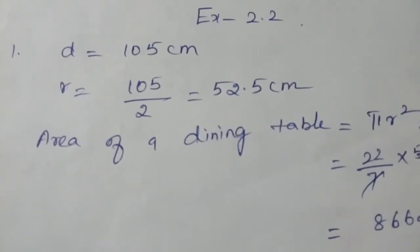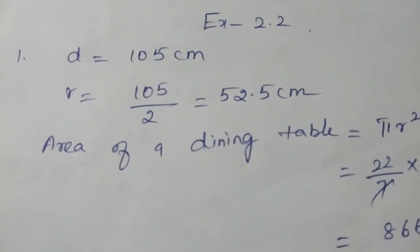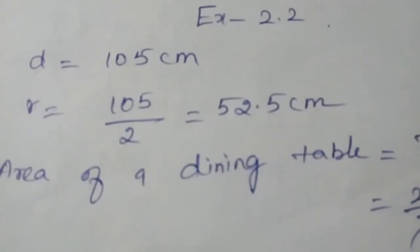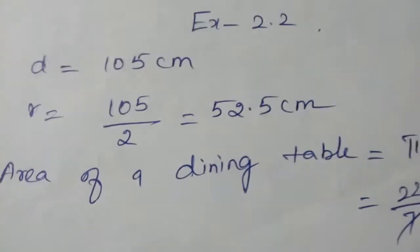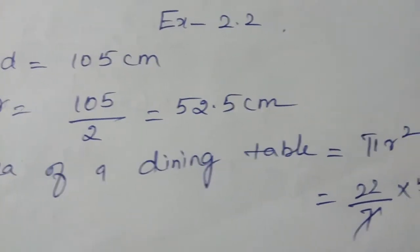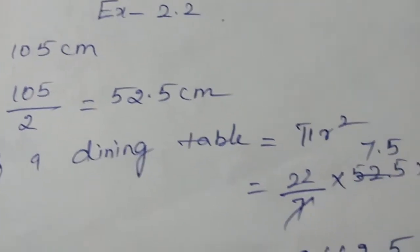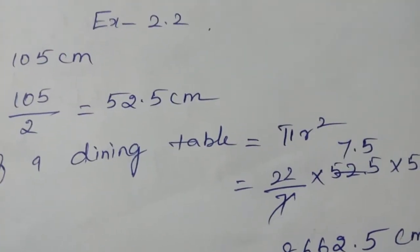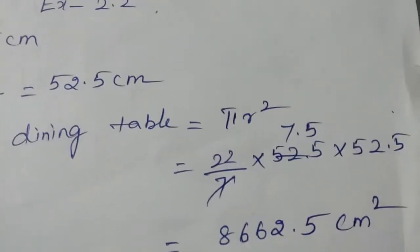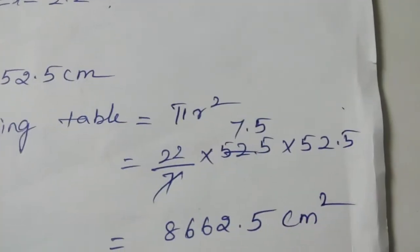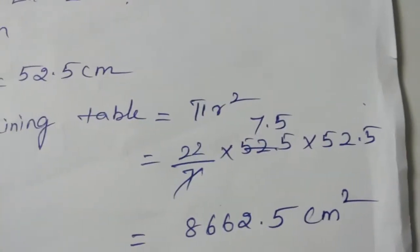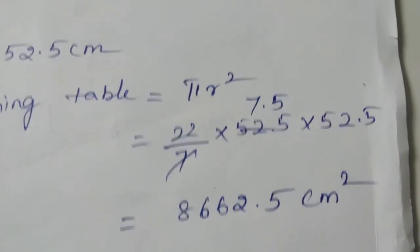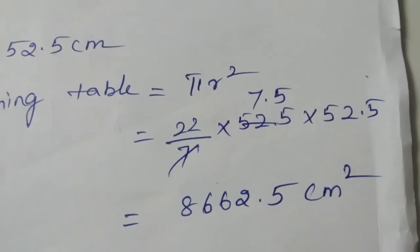So 105 divided by 2 gives the radius as 52.5 centimeters. Now, the area of the dining table — the dining table is in the form of a circle, so the formula is pi r squared.